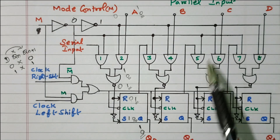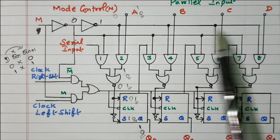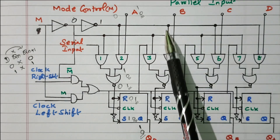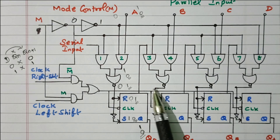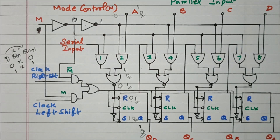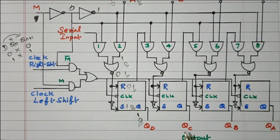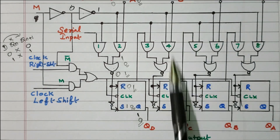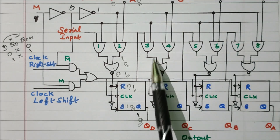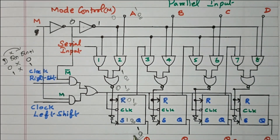This is applicable for all four flip-flops: inputs A, B, C, D are applied to the four flip-flops, and the same values are available at the outputs as QA, QB, QC, and QD. This is the parallel loading operation.